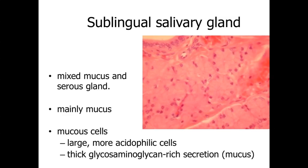The sublingual salivary gland, as opposed to the parotid which is entirely serous, is going to be a mixed gland — both mucus and sero-secreting cells — but it's going to be mainly mucus. The characteristics we've seen in mucus-secreting cells in other regions of the body: large, paler cytoplasm, maybe slightly acidophilic. Nuclei condensed down, often pressed and flattened towards the base of the cell. These cells are going to be producing mucus — a relatively thick, glycosaminoglycan-rich secretion. There's going to be a lumen at the center of each secretory structure, though it may be hard to identify in histological specimens, but recognize it's dumping materials transported by a duct system.